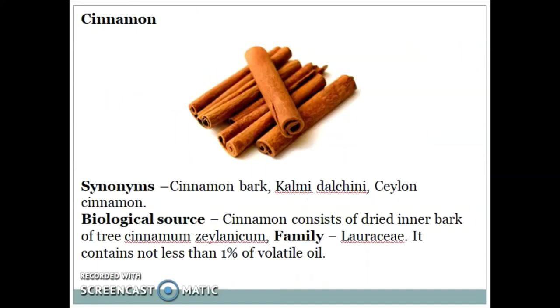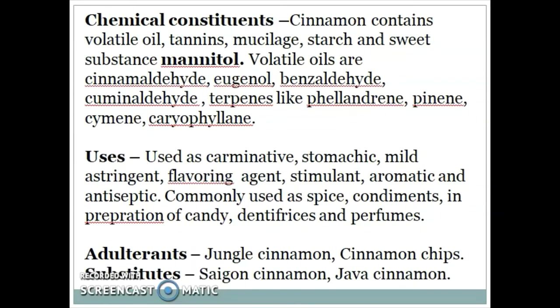Next is Cinnamon bark. Synonym: cinnamon bark, Kalmi dalchini, Ceylon cinnamon. Biological source: cinnamon consists of dried inner bark of the tree Cinnamomum zeylanicum, family Lauraceae. It contains not less than 1% of volatile oil. Chemical constituents: cinnamon contains volatile oil, tannins, mucilage, starch, and sweet substances like mannitol. Volatile oils include cinnamaldehyde, eugenol, benzaldehyde, cuminaldehyde, and terpenes like phellandrene, pinene, cymene, and caryophyllene.